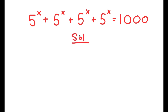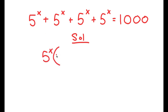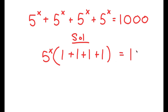For my solution, I'm going to first start by factoring out 5 to the power of x from my left-hand side, because as you can see, we have 4 of the same terms on my left-hand side, and the easiest way to go about solving this equation is to factor them out. So I get 5 to the power of x times — well, 5 to the power of x divided by 5 to the power of x is simply 1 — so I get 1 plus 1 plus 1 plus 1 is equal to 1000.